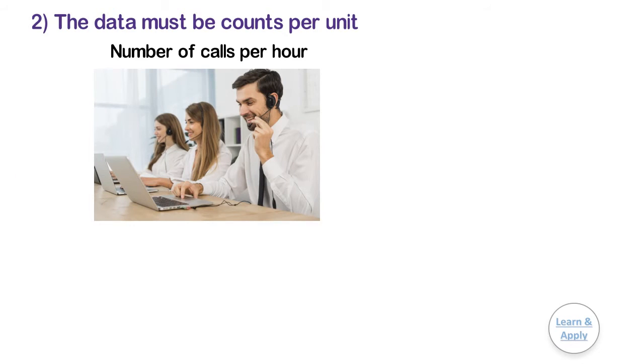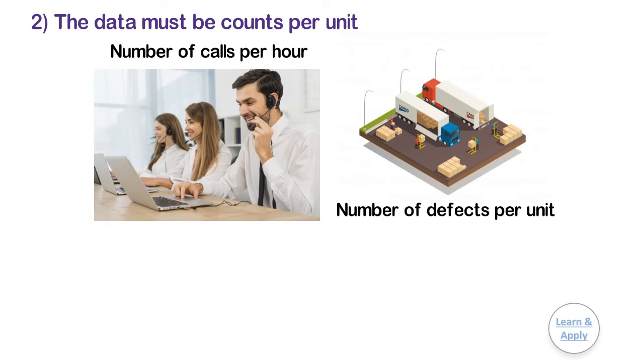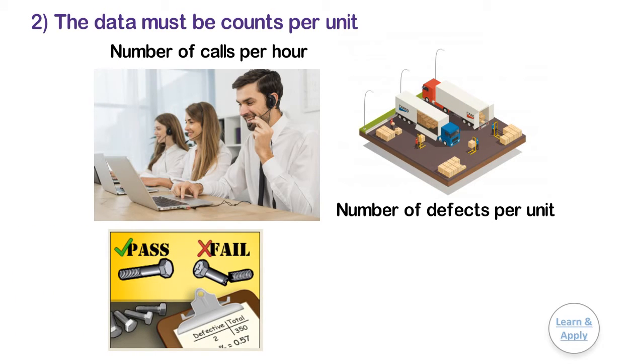Second, the data must be counts per unit, such as the number of calls per hour to a call center or the number of defects per unit in a shipment. If your data classifies each observation into one of two categories, such as pass or fail, then use two proportion tests.